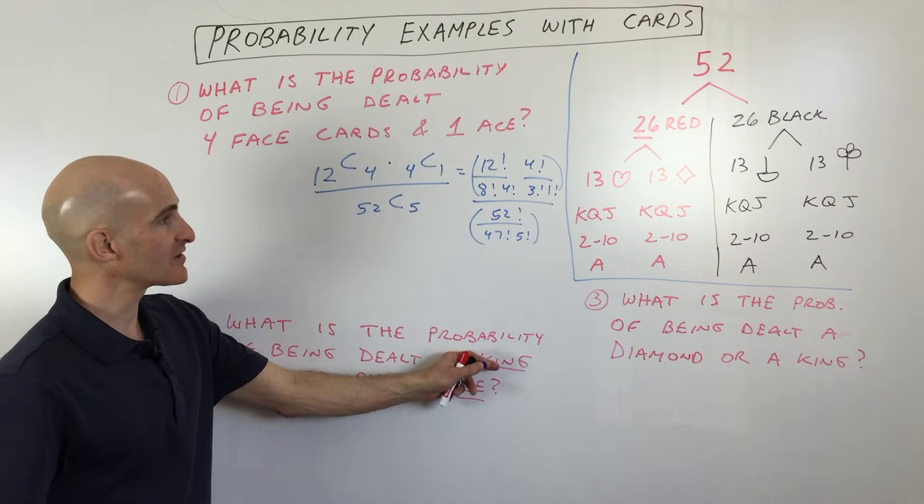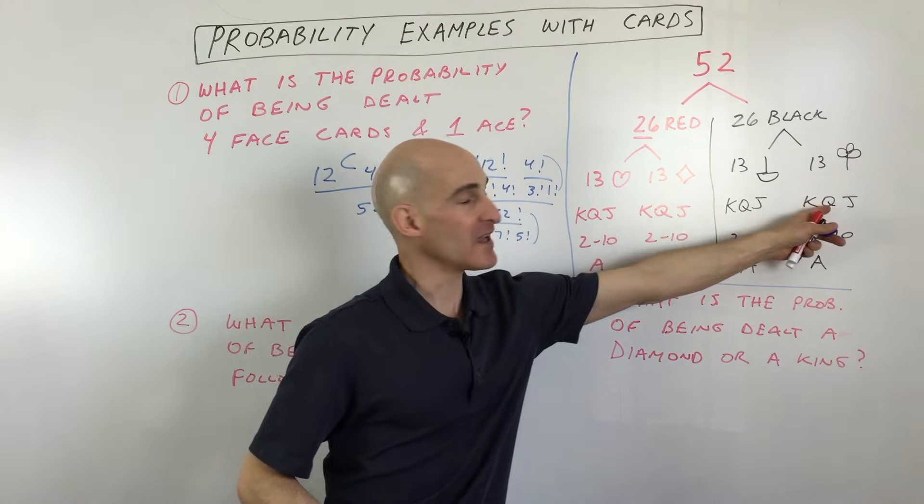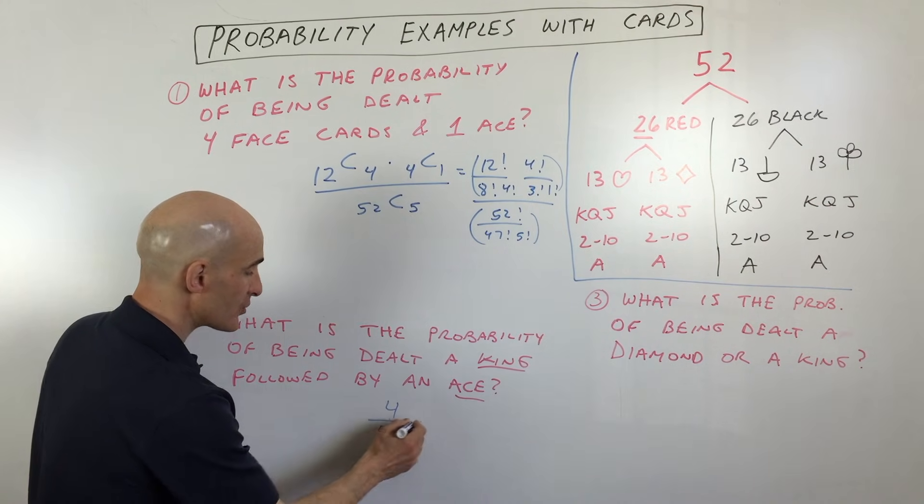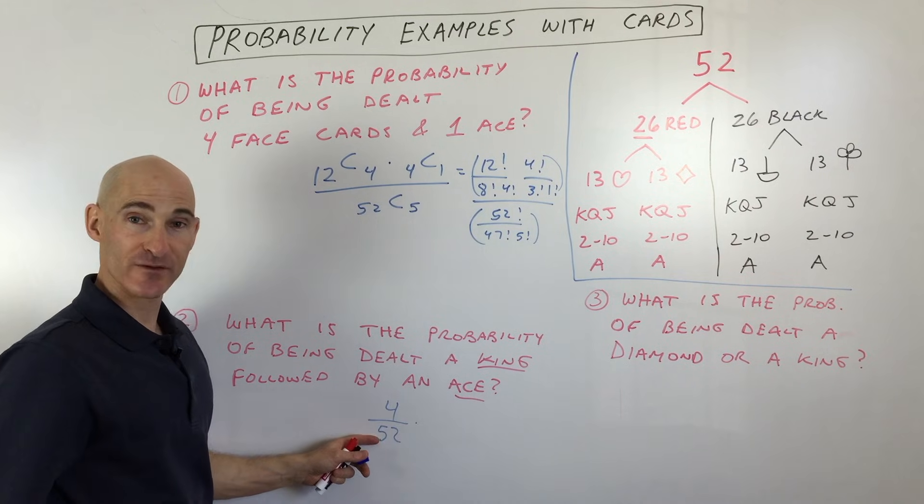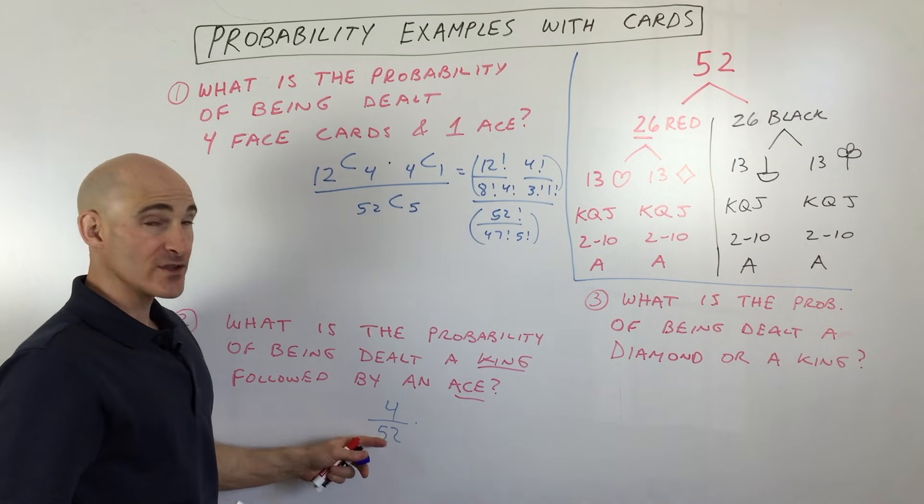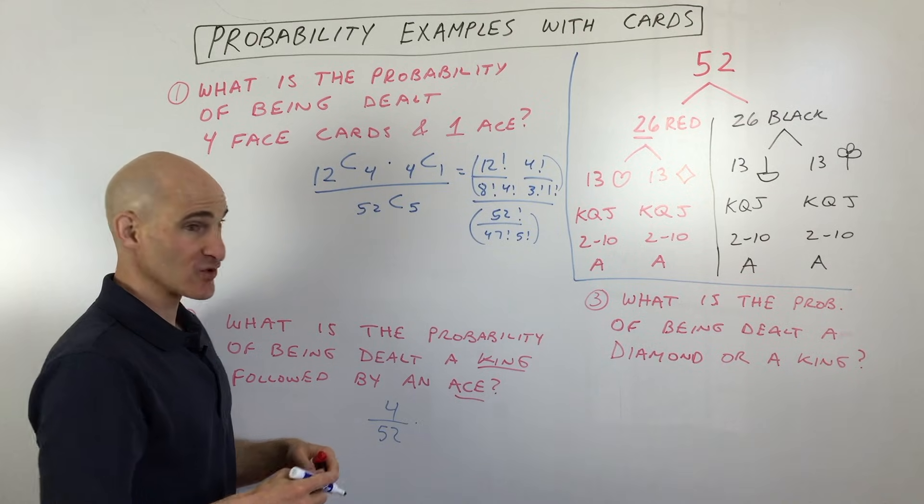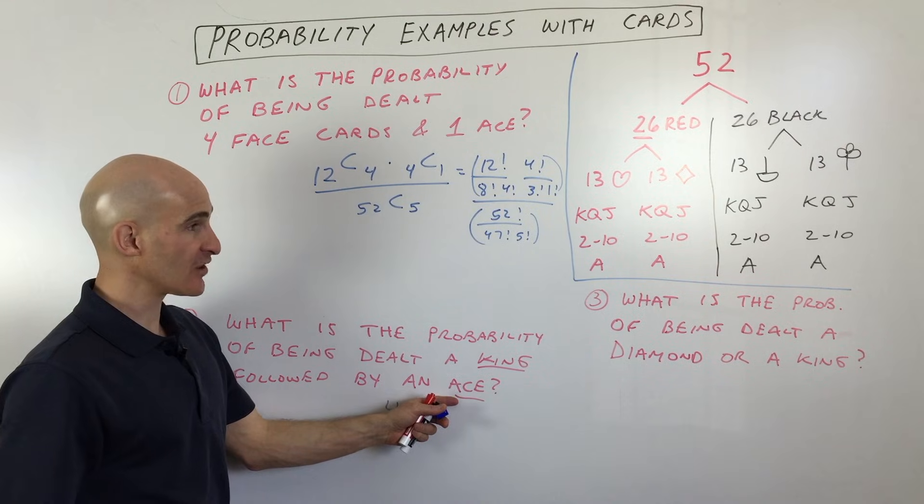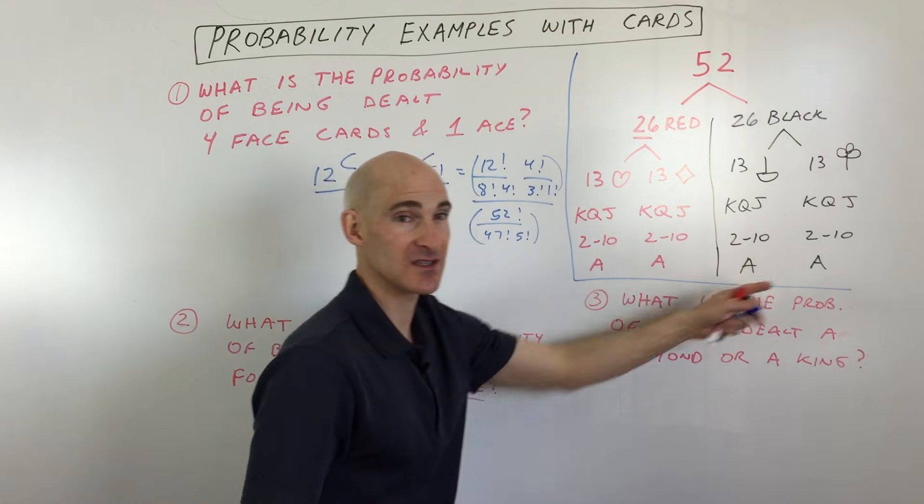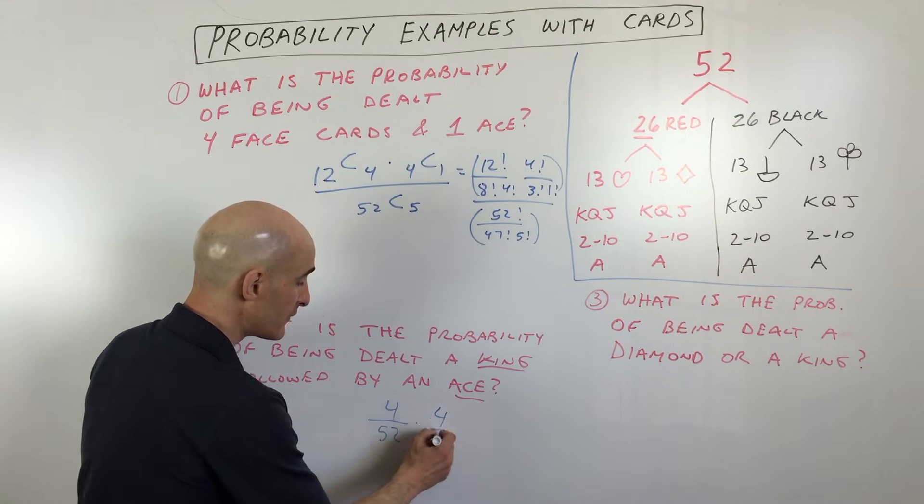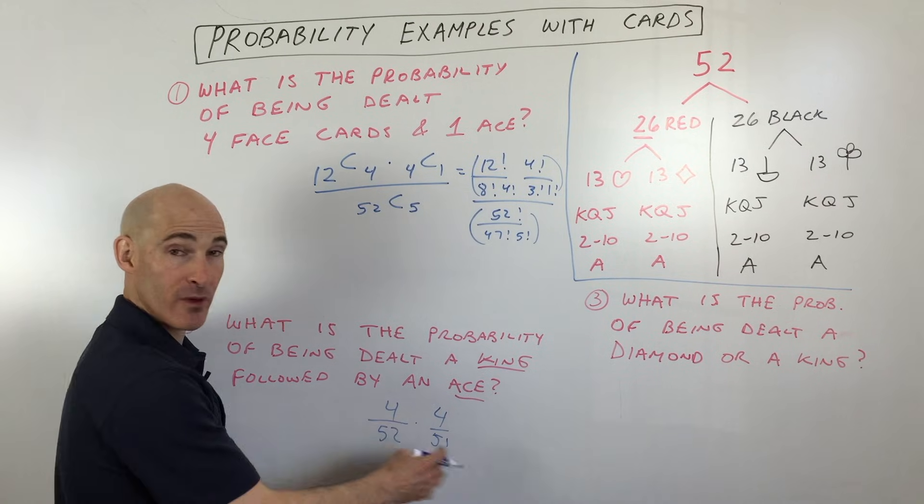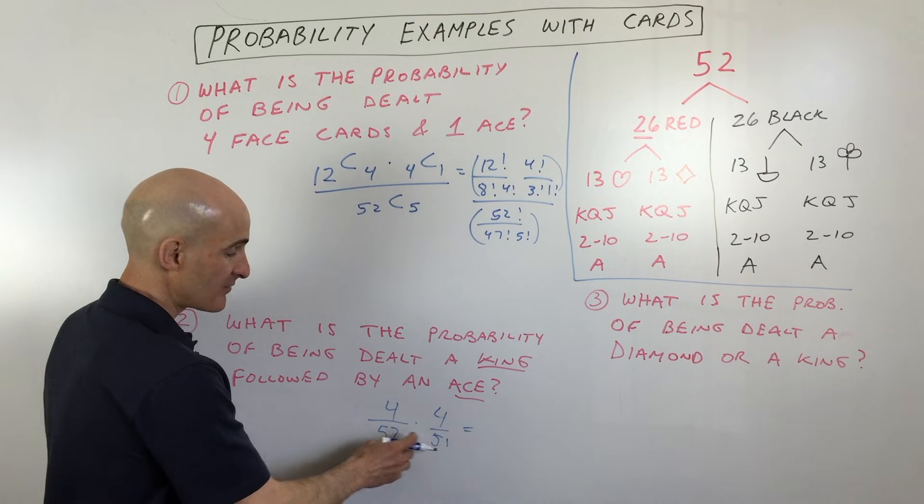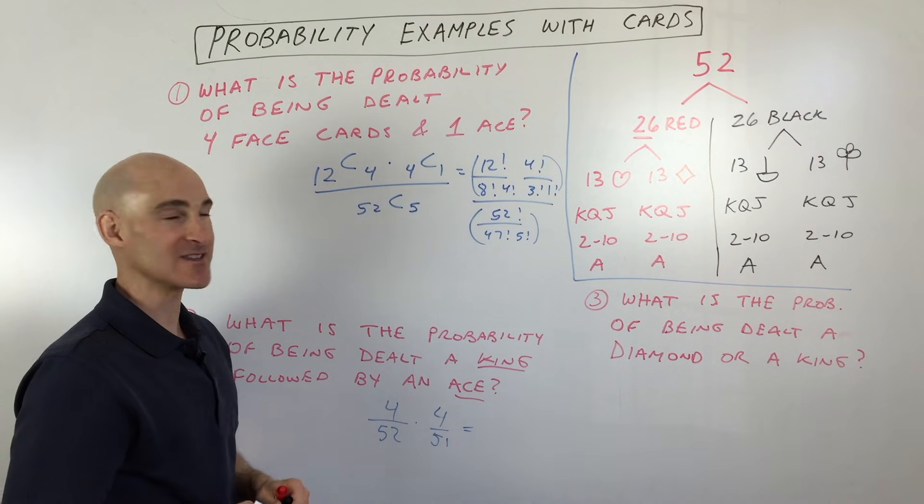So what we're going to do here is we're going to look at probably being dealt a king. Well, there's four kings, and there's 52 cards total. So the probability is four chances out of 52. But once you're dealt that king, now what happens? There's only 51 cards left. And we say, what's the probability of being dealt an ace? Well, you can see there's four aces out of the 51 remaining cards. So if we multiply these together, we're going to get the probability. So it's 16 divided by whatever 52 times 51 is.